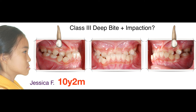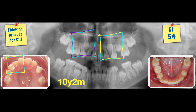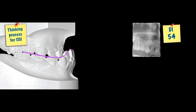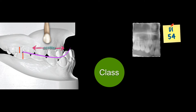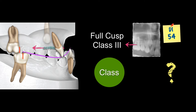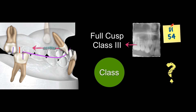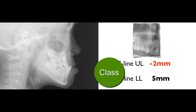Let me give you an example. Jessica, at the age of 10, presented with impaction. How do you solve this problem? Severe curve of Spee. First, when we look at the model and imagine if you want to create a space for the canine, the model will become full Class 3, and the upper incisor will become severely flared. So it becomes very severe Class 3.